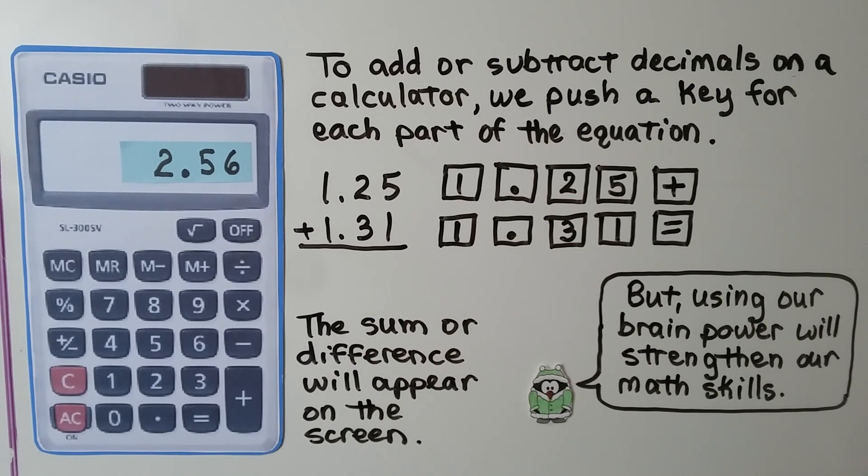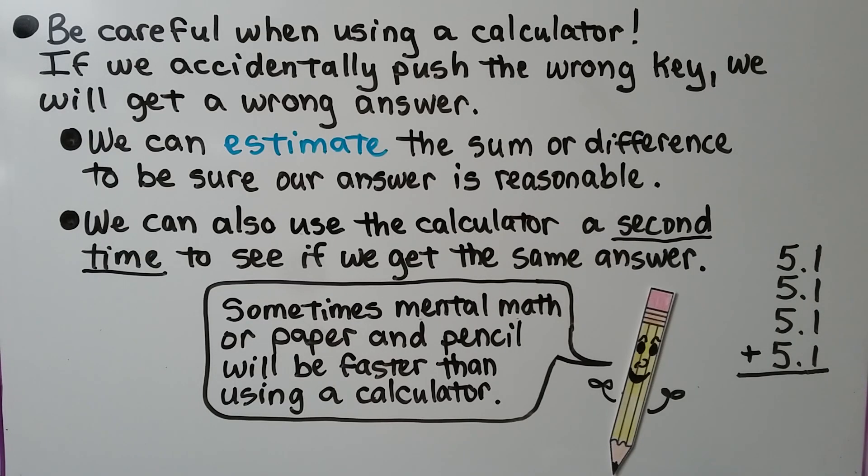And there's other reasons to do this using brain power. Be careful when using a calculator. If we accidentally push the wrong key, we will get a wrong answer. We can estimate the sum or difference to be sure our answer is reasonable. We can also use the calculator a second time to see if we get the same answer.